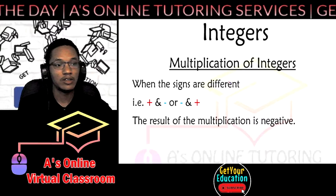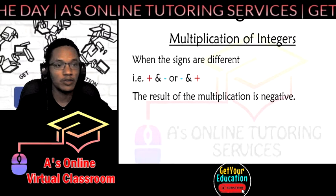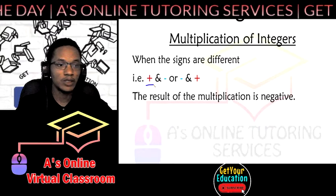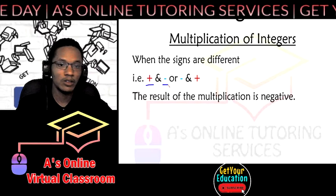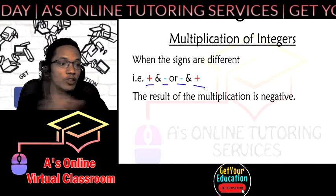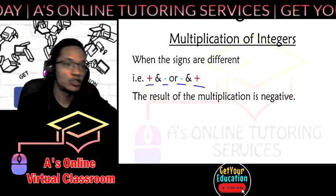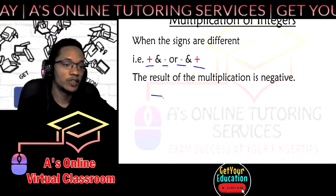This is for when the signs are the same in both numbers in multiplying. Sometimes the signs can be different. So when multiplying integers and the signs are different, for example if you have a positive number and a negative number or if you have a negative number and a positive number, doesn't matter which order it comes in, the result of the multiplication will be negative.